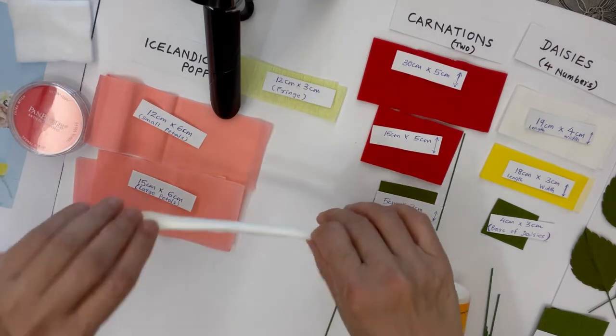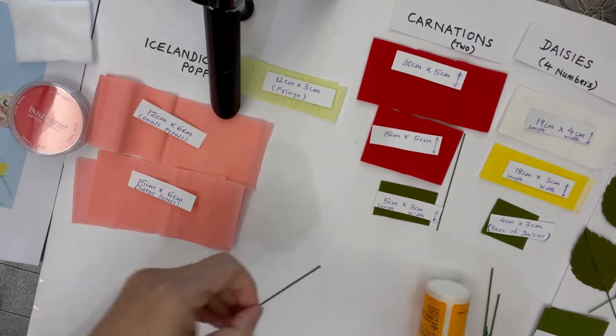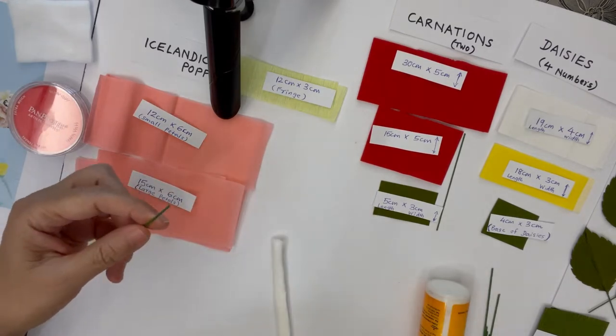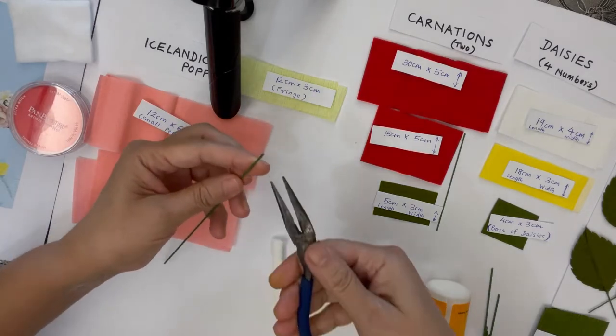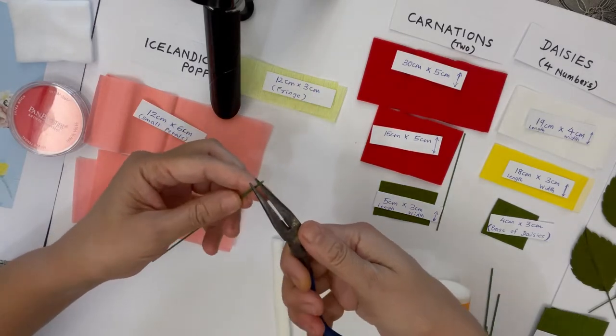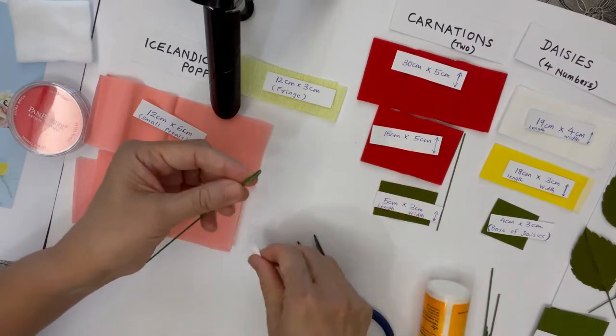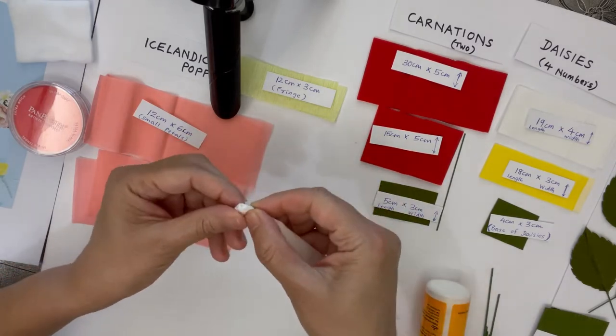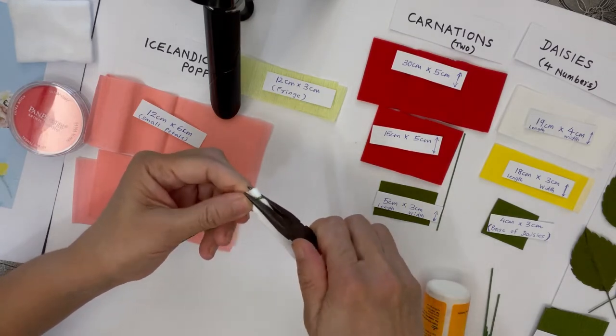Once you form a thick strip, I'll use an 18 gauge floral wire and make a loop. Fix this inside and press it so the center remains in place and won't fall off.